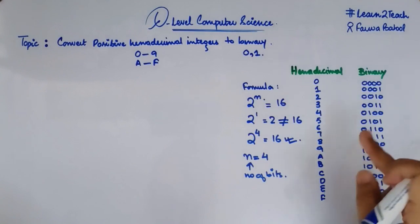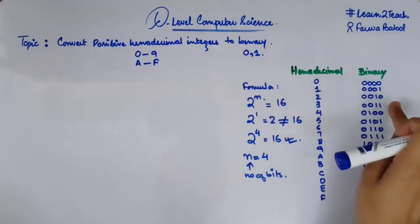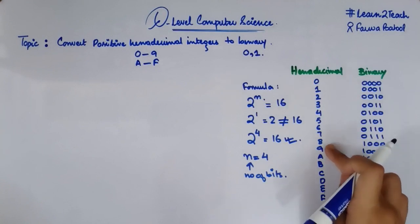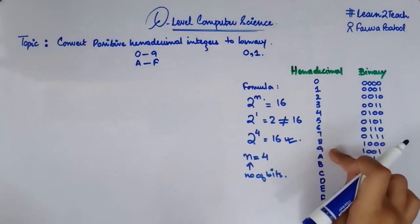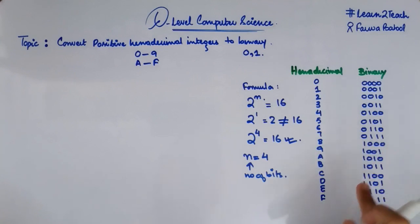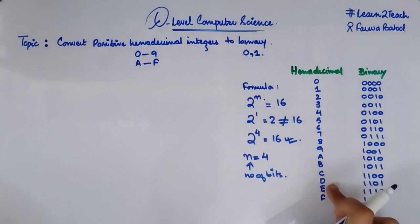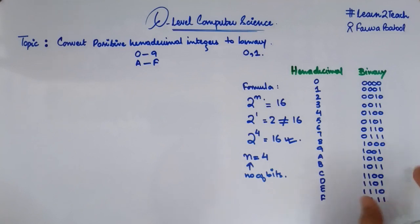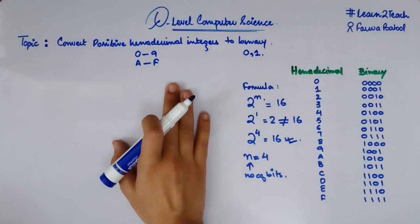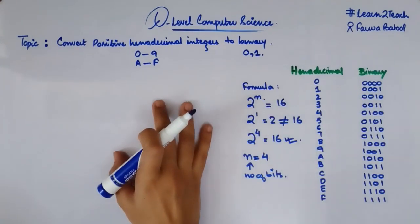So this is how we convert a hexadecimal digit into its binary equivalent. This is the conversion table you need to remember. For example, the value of 9 in hexadecimal is 1001 in binary. Similarly, E in hexadecimal equals 1110 in binary. Now let me move to an example so we can actually do the conversion and make it more clear.